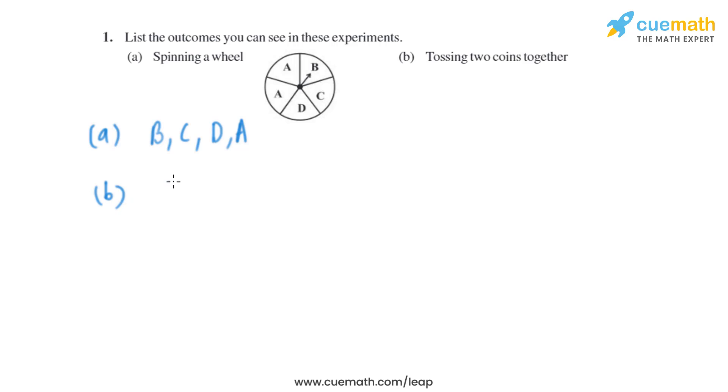Tossing two coins together. When we toss two coins together, let's say in the first one we have got head, in the second one we have also got head. In the first one we have got head, but in the second one we have got tail. In the first one we have got a tail, and in the second one we have also got a tail. In the first one we have got a tail, and in the second one we have got head. So these are the four possible outcomes of tossing two coins together.